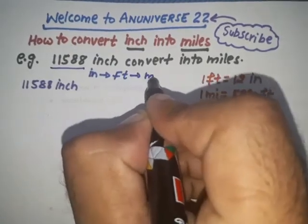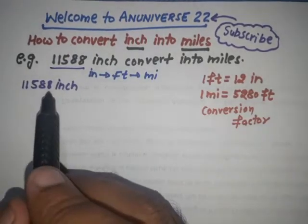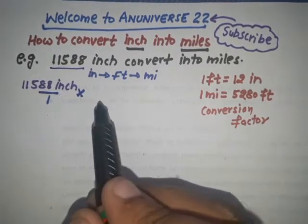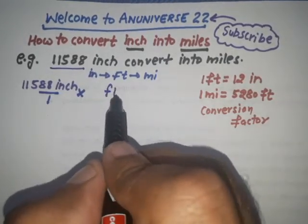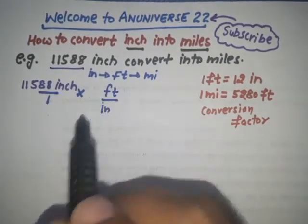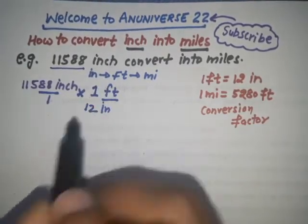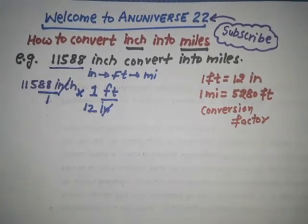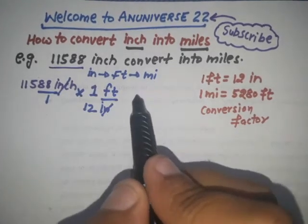We have 11,588 inches. That is multiplied by the conversion fraction: feet at the top and inches at the bottom. As we know, one foot equals 12 inches, so we multiply by 1 ft/12 in. Cancel the inches. Now we need to convert this feet into miles.